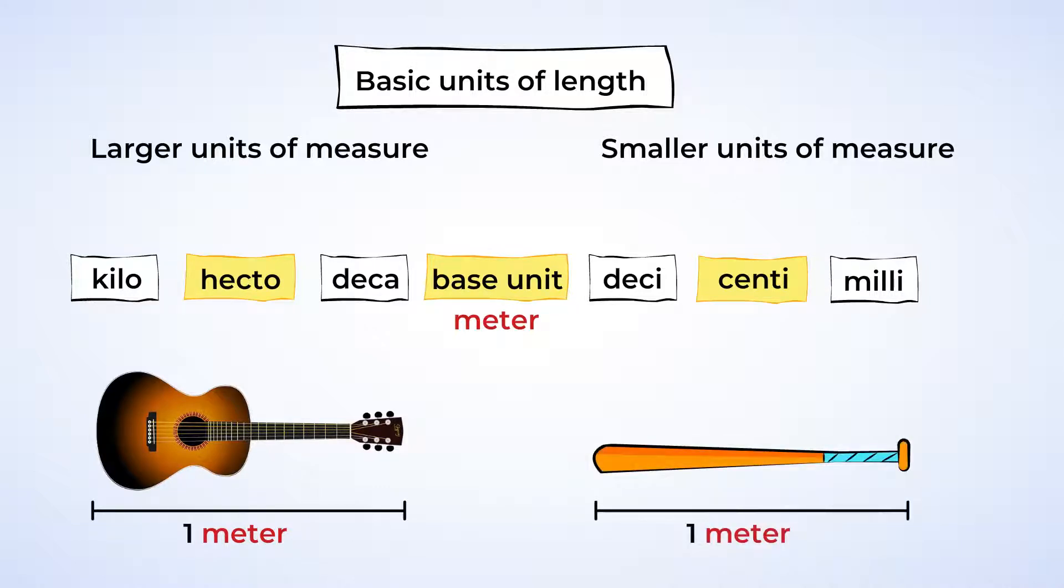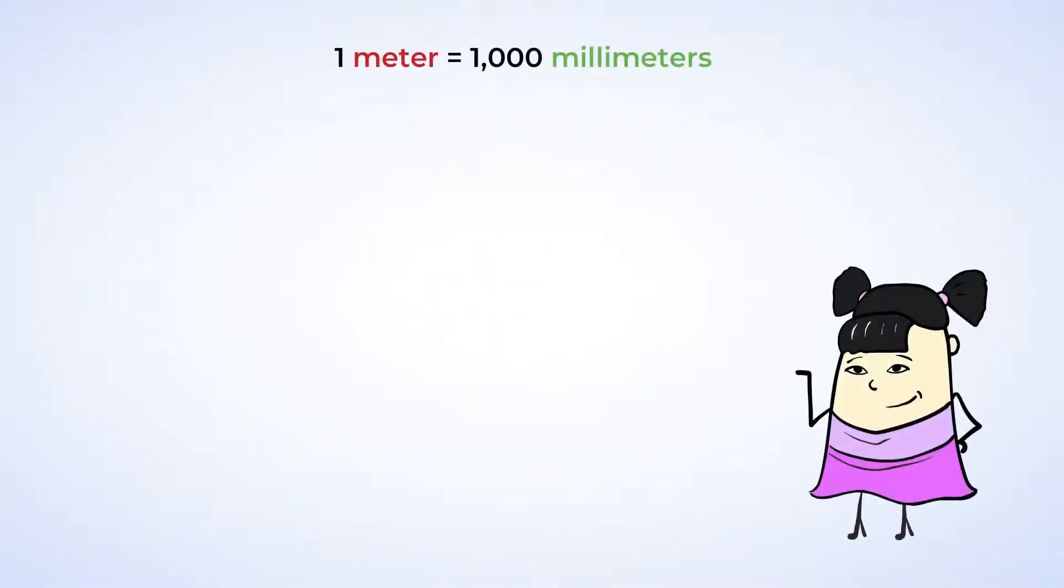Let's say we want to measure something that's really short, like the length of our fingernail. It's obviously quite shorter than a meter. And so we need to use a smaller unit of measurement. Now look at the chart at the prefix milli. Literally, 1,000 millimeters is equal to 1 meter. Now that is pretty small. And millimeters is the best unit to measure a fingernail. In fact, the average fingernail is about 13 millimeters long.